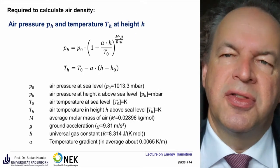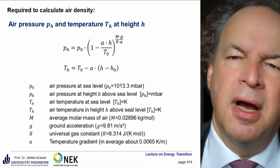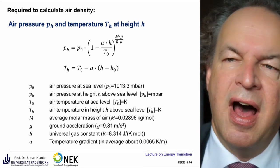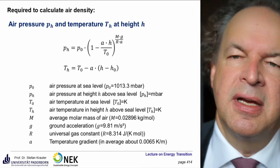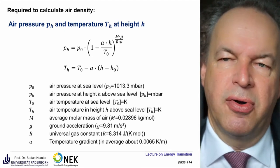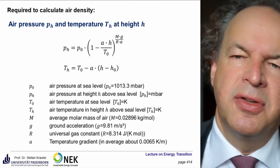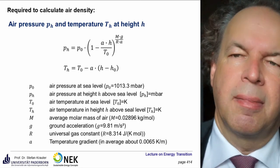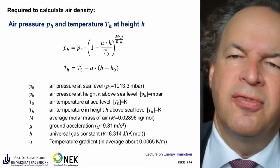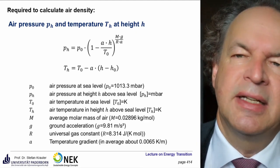Air pressure is also changing with height — it follows an exponential function. As a parameter you have the temperature gradient. The temperature is decreasing with height at about 6.5 degrees per thousand meters. Other parameters include R the universal gas constant, the ground acceleration, and the average molar mass — for air it's 0.02896 kilograms per mole. You have the air temperature at a certain height, the air temperature at sea level, and the pressure both at sea level and at height h.